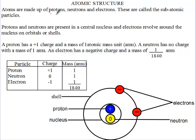Atoms are made up of protons, neutrons, and electrons. These are what we call the subatomic particles.